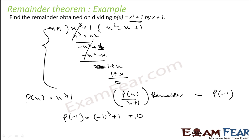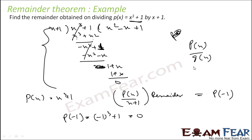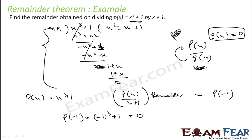Hope you understood the concept of the remainder theorem. If I have two polynomials — dividing p(x) by something like x + 1 or x + 3, that is x + k — then you find p(-k). For p(x) divided by g(x), you set g(x) = 0, find the zeros of g(x), and substitute that zero into p(x) to get the remainder.